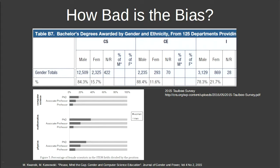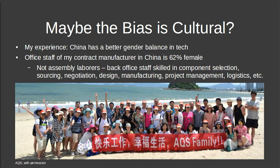When I go to China and work with engineers, the teams are actually fairly well gender-balanced. This is a picture of the office staff at my factory in China — 62% female. These are not just assembly workers; they do component selection, sourcing, negotiation, design, manufacturing, project management, and logistics. So it's not that there's a fundamental reason we can't have more women in technology — there's something culturally problematic keeping them out.